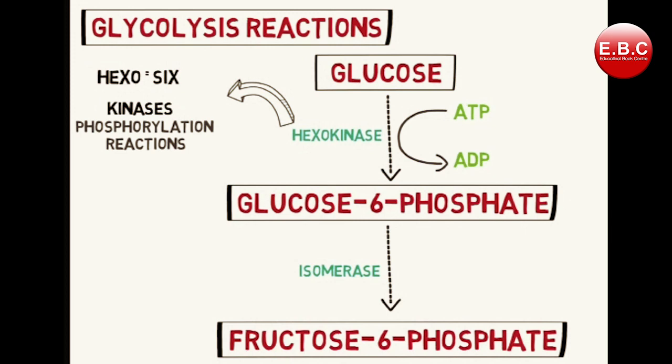Glycolysis reactions: it all begins with the molecule of glucose that enters the cytosol. The first reaction is the conversion of glucose to glucose-6-phosphate, catalyzed by the enzyme hexokinase. The word hexo means six, denoting the six-carbon compound. Hexokinase transfers a phosphate molecule from ATP to glucose, converting glucose to glucose-6-phosphate. In this reaction, ATP is converted to ADP — hence, it utilizes one molecule of ATP.